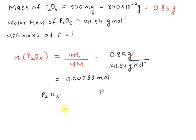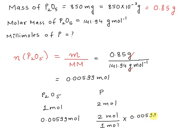Now we can write P₂O₅ and phosphorus. We can say one mole of P₂O₅ contains two moles of phosphorus. Then 0.00599 moles of P₂O₅ will contain 2 mole divided by 1 mole times 0.00599 mole. We can eliminate this mole unit.